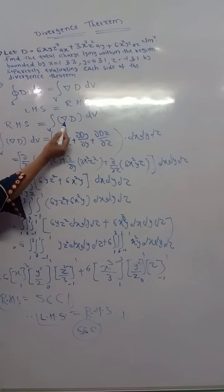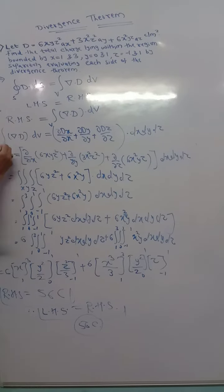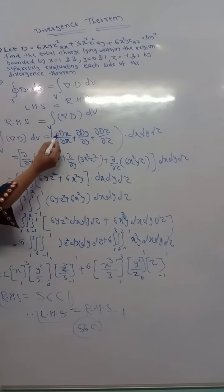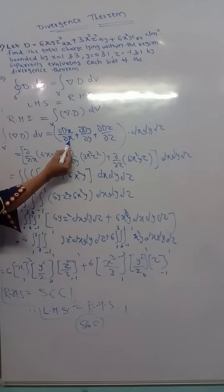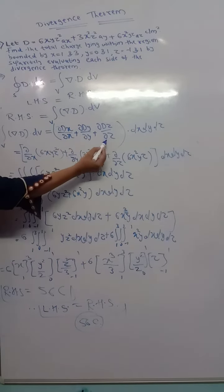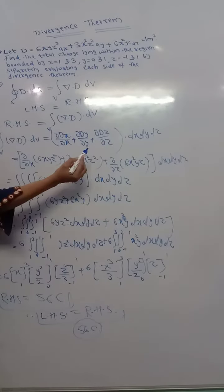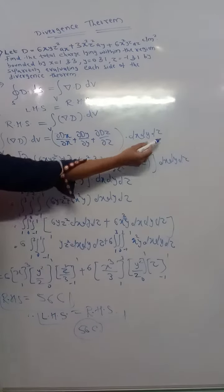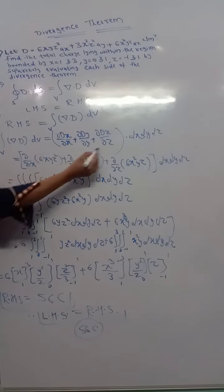Right-hand side is equals to integral of volume of delta d into dv. What is my integral of delta d into dv? That is dou x/dx, dou y/dy, dou z/dz. What is my dv in terms of the Cartesian coordinate system? That is dx dy dz.